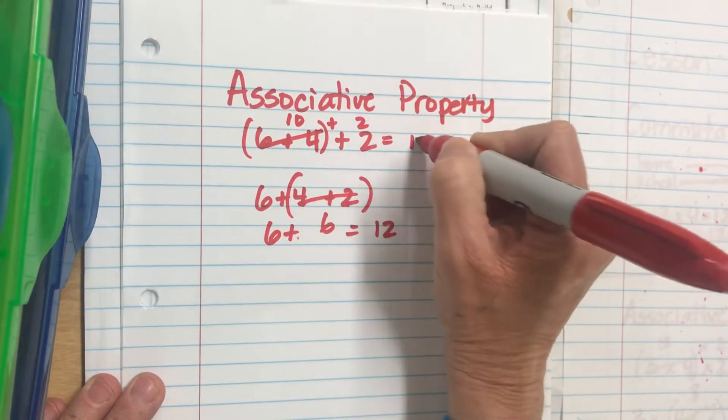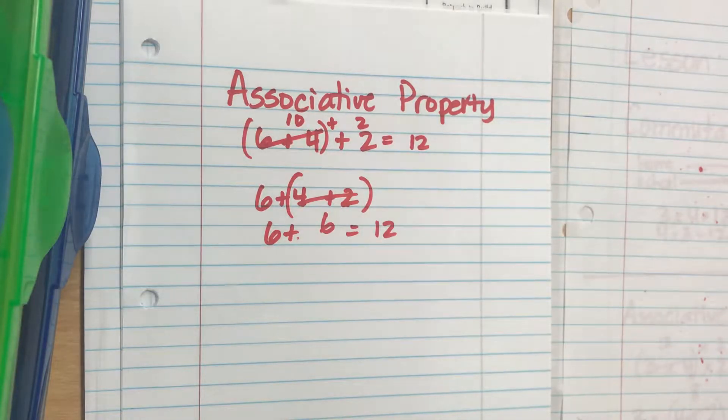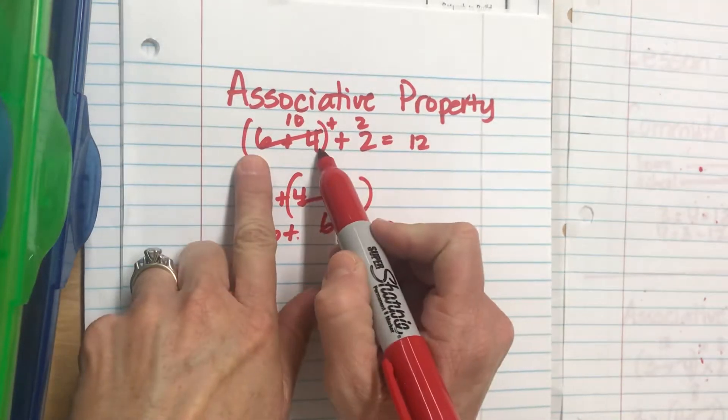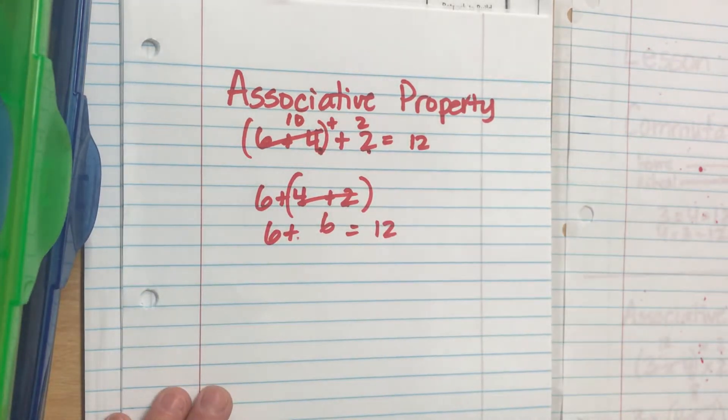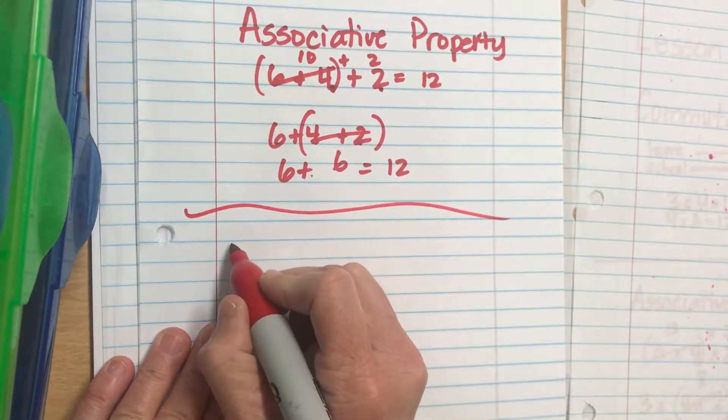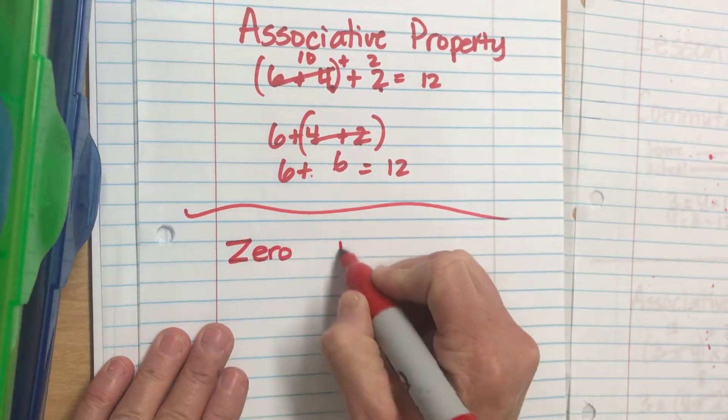So it's wherever those parentheses are. Remember, associative means you can associate with whoever you want to associate with. So I can associate these two numbers first by putting the parentheses, or I can do these two numbers first by putting the parentheses. We also have the zero property.